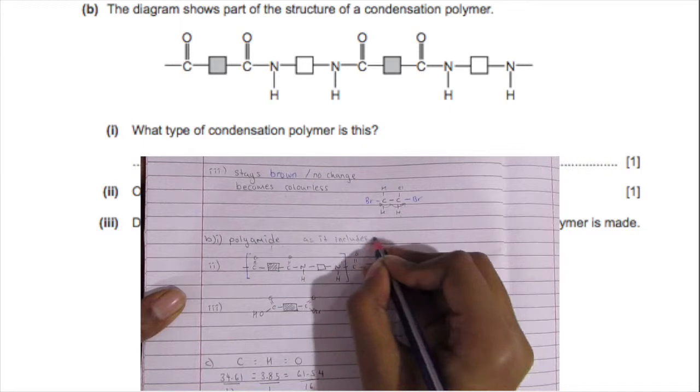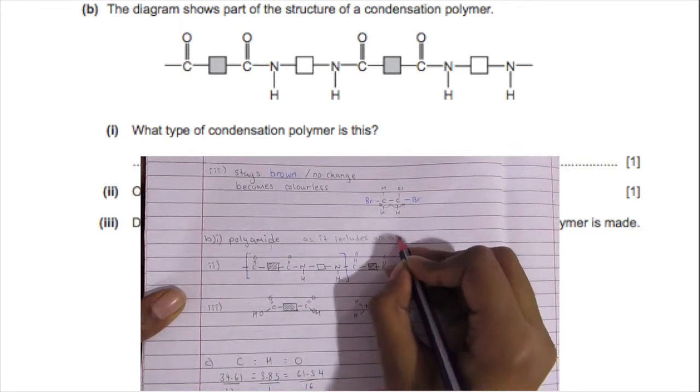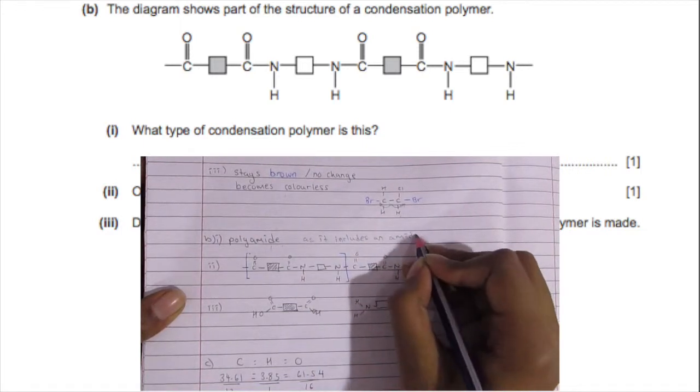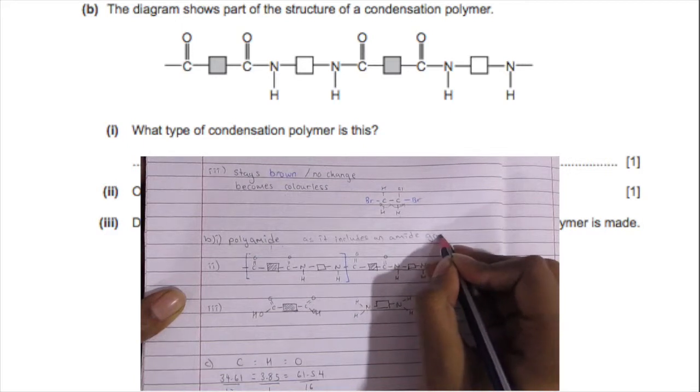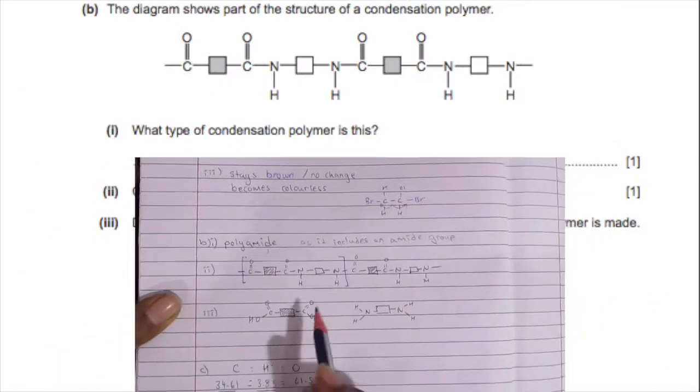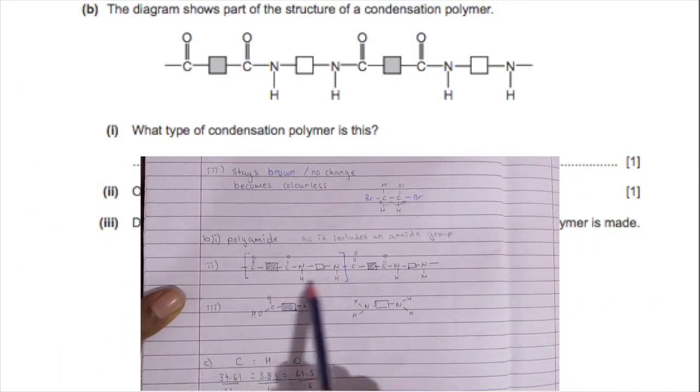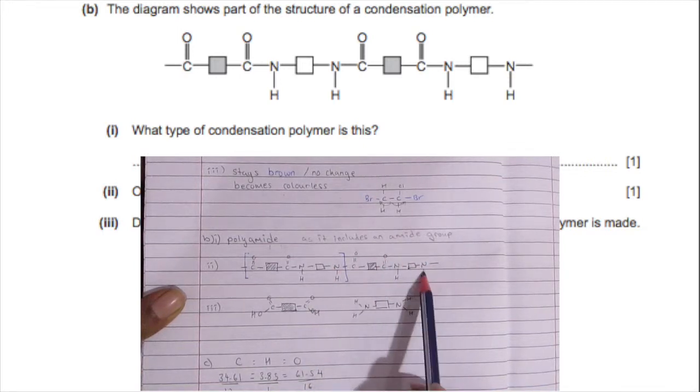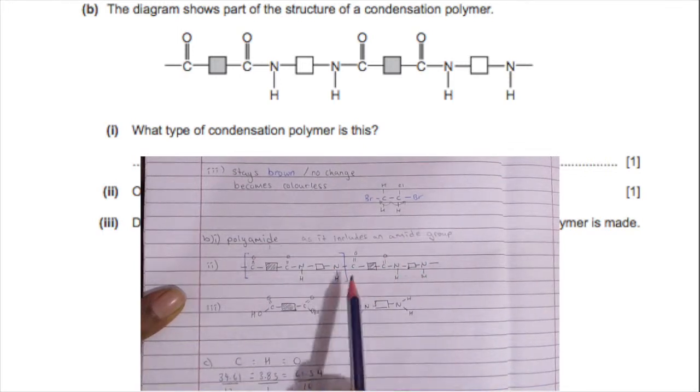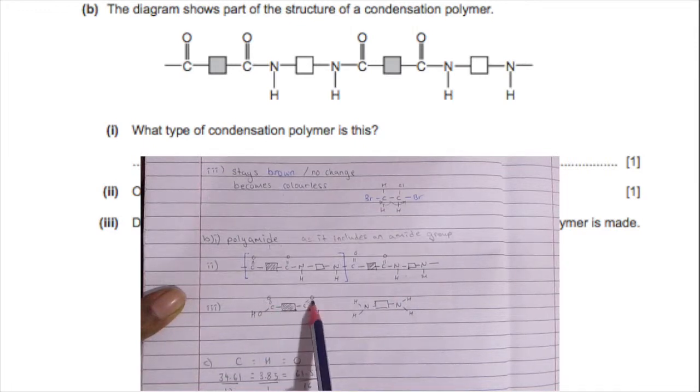Now this is a polyamide as it includes an amide group. So there's the nitrogen and the carbon going on over there, and it's not an ester obviously because an ester is formed between an alcohol and a carboxylic acid.